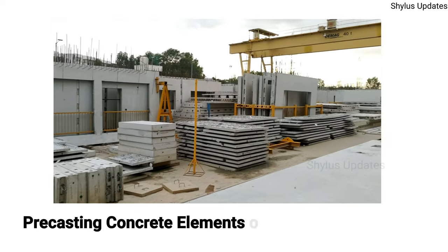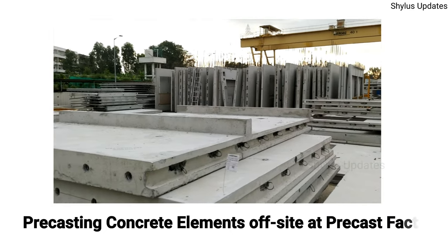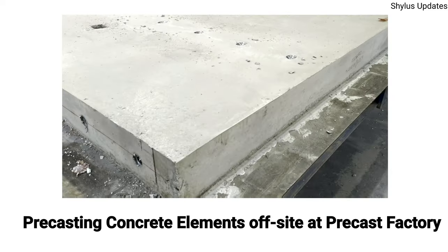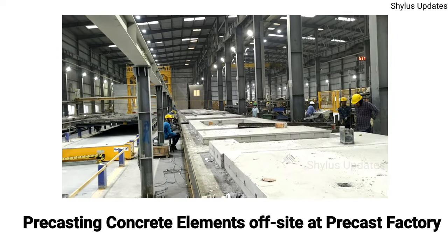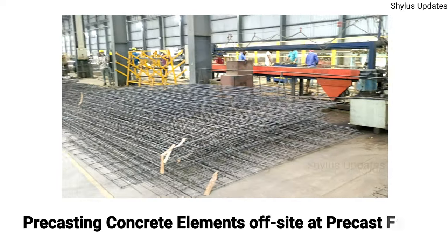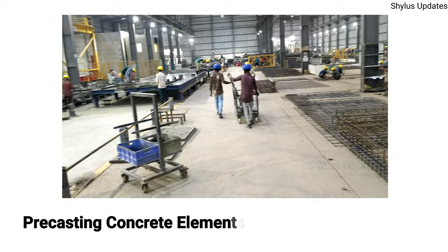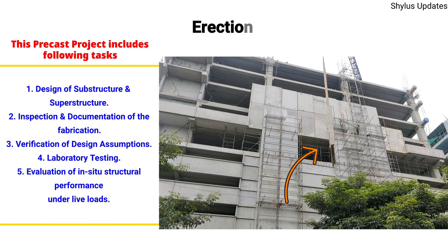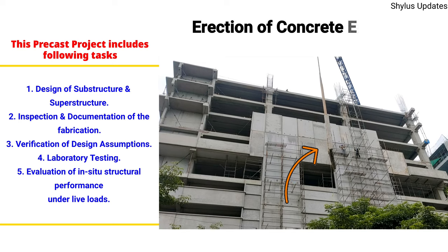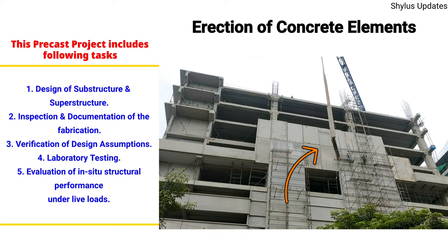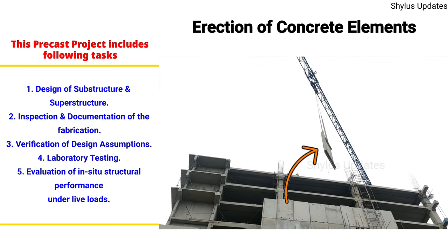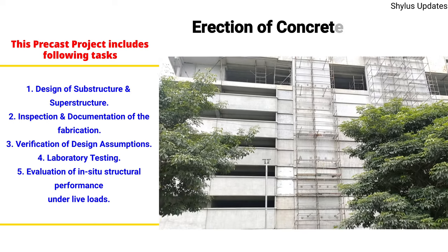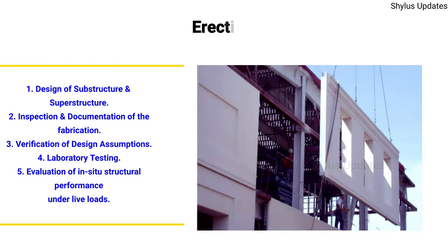This type of construction has the advantage that the individual components are manufactured off-site, where increased quality is usually achieved. Because much of the work is constructed away from the construction site, public disruptions are minimized and on-site construction time is reduced. The project scope includes: design of substructure and superstructure, inspection and documentation of fabrication, verification of design assumptions for box girders, laboratory testing to confirm adequacy of the box girders, and evaluation of in-situ structural performance under live loads.